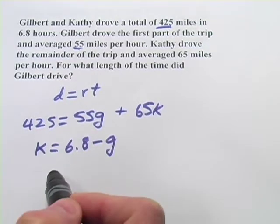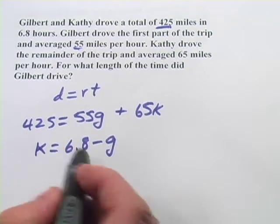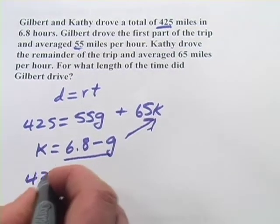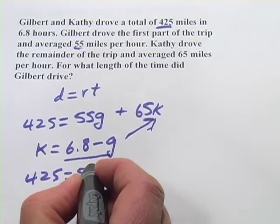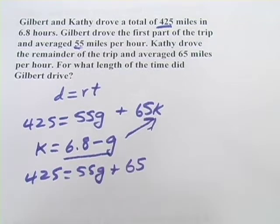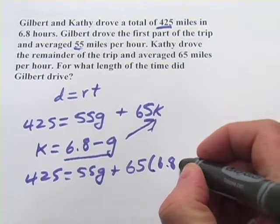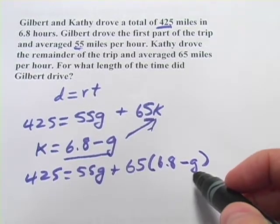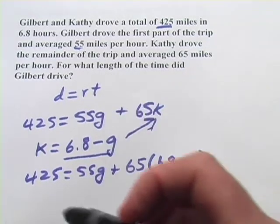So let's go ahead and do this with substitution. I think that makes the most sense. We'll put this in for K up here. So we would get 425 equals 55 Gilbert plus 65 times 6.8 minus Gilbert. Now we've got it down to one variable. And it's actually G, which is what we're looking for. So that's very handy.